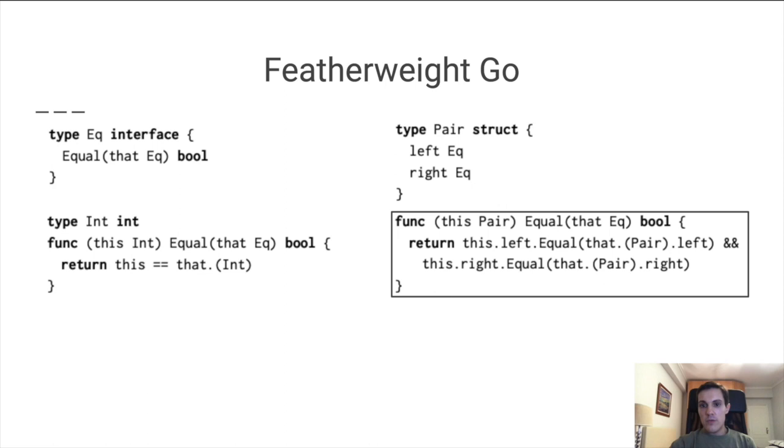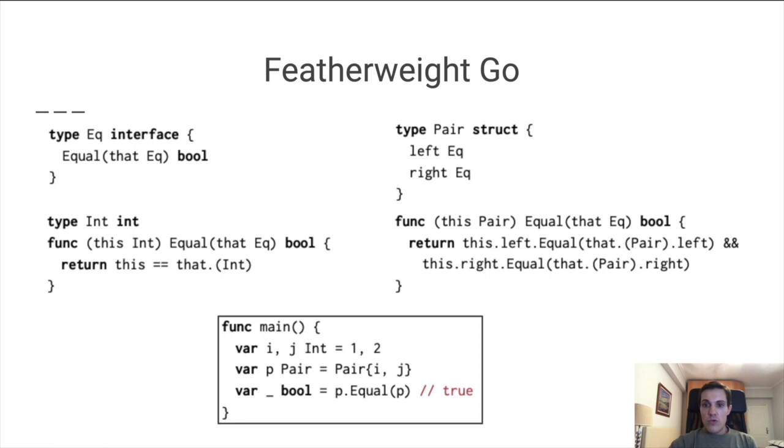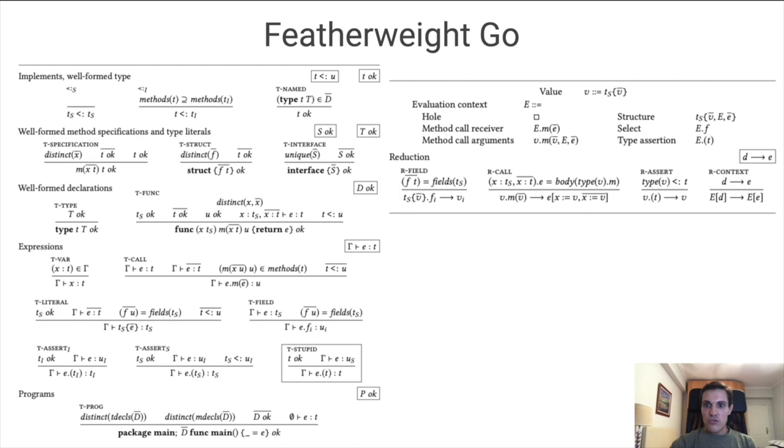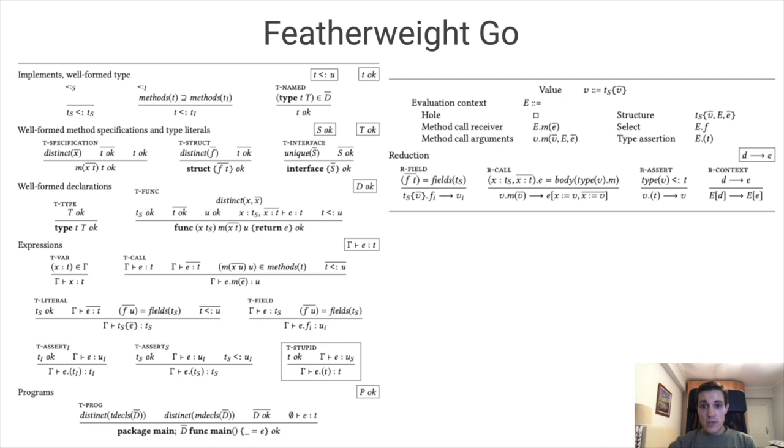If we put it all together, we can have a program with a pair of ints, and we can ask if the pair is equal to itself, and hopefully it will print out true. I won't really bore you by going through all the rules, but you can tell that FG is actually quite tiny. All the rules that define both its statics and semantics fit in this slide. FG is formally reasonable, so it has progress and preservation, as you might expect.